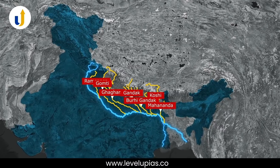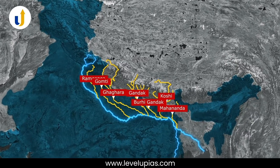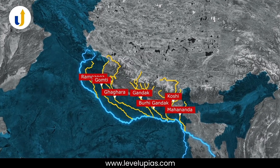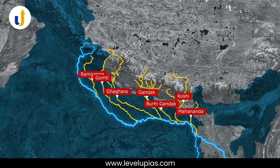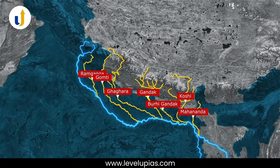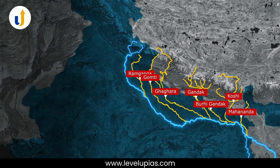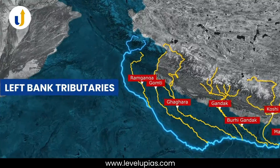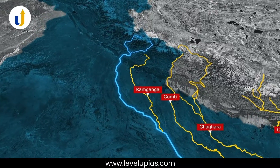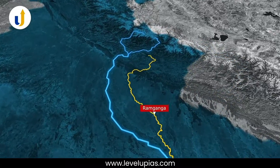In our previous video we have seen the left and right bank tributaries of River Ganga. In this video we will see in detail the left bank tributaries. To begin with, the first river is the Ram Ganga.